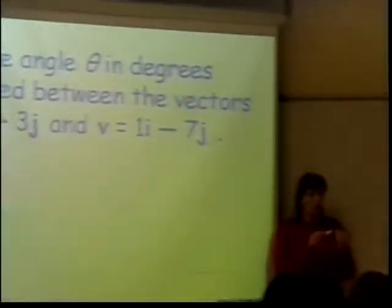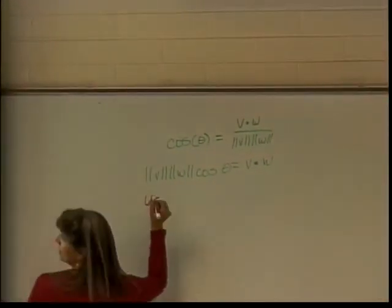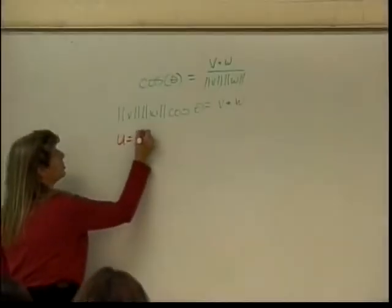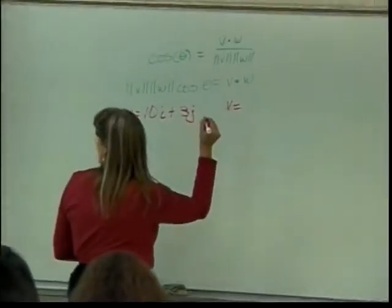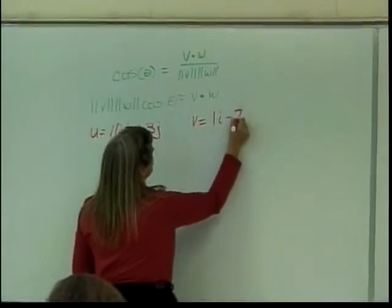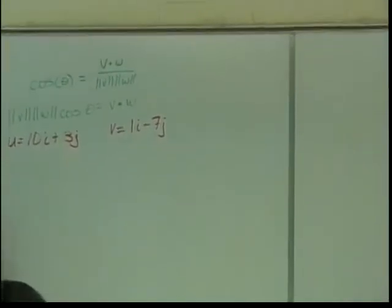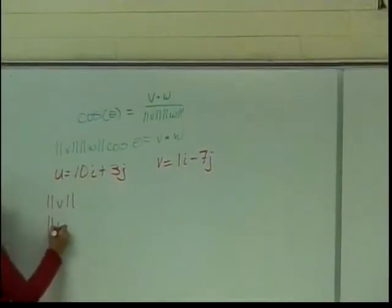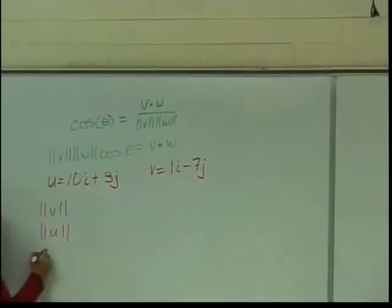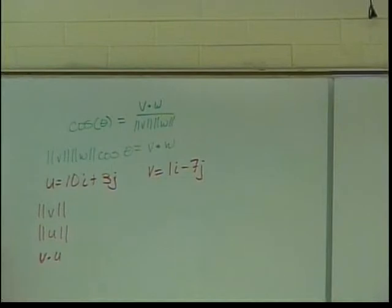Just so we're in the same place on both of them. I have vectors u, which is 10i plus 3j, and vector v, which is 1i minus 7j. By the way, I don't have to write the one, it's just there for reminder purposes. I need to find the magnitude of v, the magnitude of u, and the dot product of v and u in order to find the angle between my vectors.